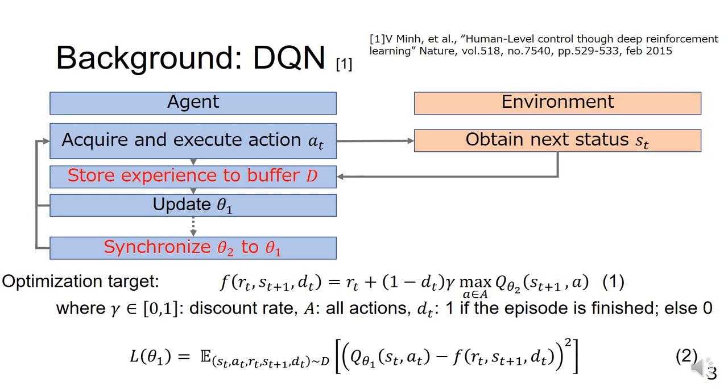In equation 2, the experience replay technique is used. This technique first stores the past experience in a buffer D. Then, a mini-batch is created from randomly sampled from D and training is executed. Therefore, it is possible to acquire actions independent of time series.